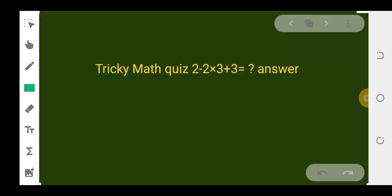Welcome back to this channel. Today I will solve another tricky and trendy math quiz that is confusing many people on social media. The quiz is: 2 - 2 × 3 + 3 = ?